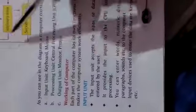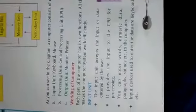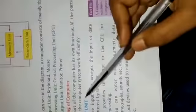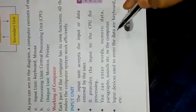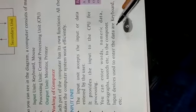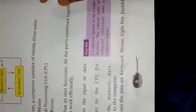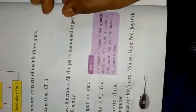Working of computer — ab yahan par hum deeply padhenge ki computer kaise working karta hai. First is input unit. Is input unit ke through data hum enter karte hain. Yeh data kisi bhi type ka ho sakta hai — numeric, alphabet, paragraph, ya koi bhi sound. Isko enter karne ke liye hamen input device ki zaroorat padti hai — keyboard, mouse, light pen, scanner, etc.